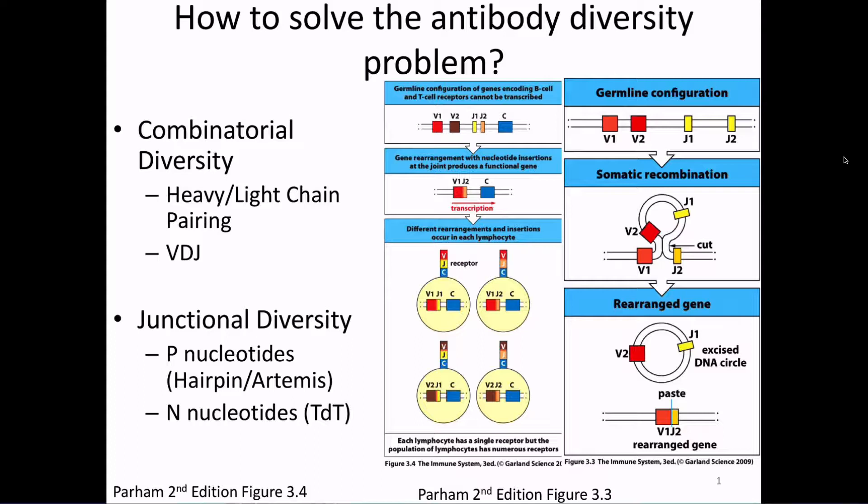Today we're going to continue with our discussion of the antibody diversity problem. Last time I gave you the big picture answer: we get a huge number of antibodies based on combinatorial diversity, pairing different heavy and light chains, and combining mini-gene segments named V, D, and J. We also have junctional diversity, where when we paste things back together, we don't paste them perfectly, which further increases diversity.